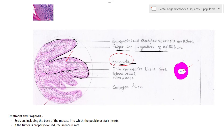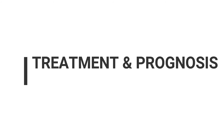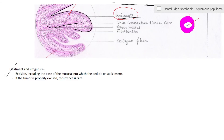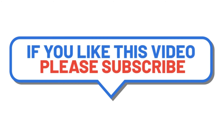For treatment and prognosis: excision is performed including the base of the mucosa into which the peduncle or stalk inserts. If the tumor is properly excised, recurrence is rare. You must remove it completely, including the base of the mucosa into which the peduncle or stalk is inserted. We are done with the topic of squamous papilloma.